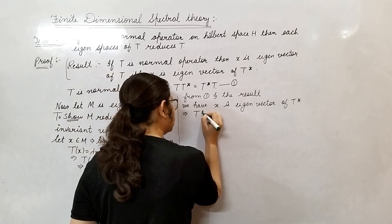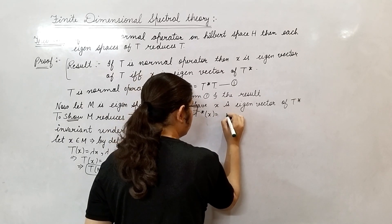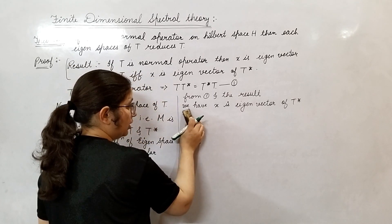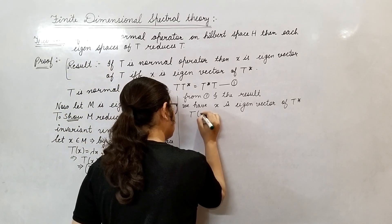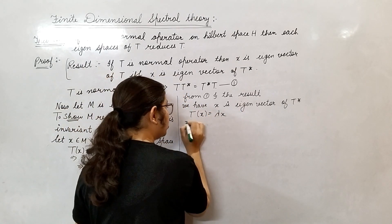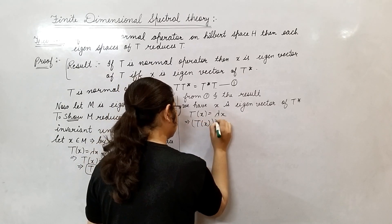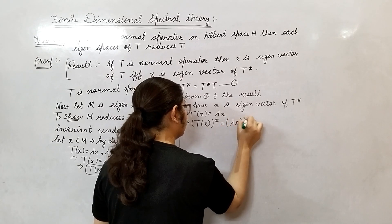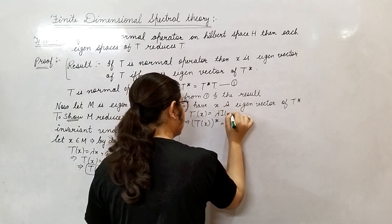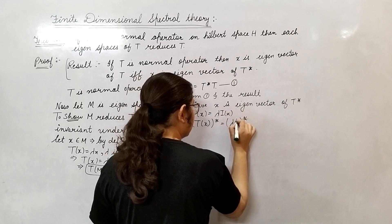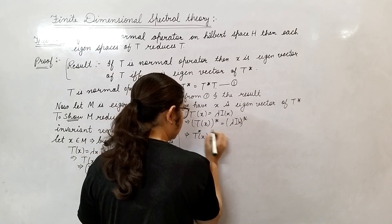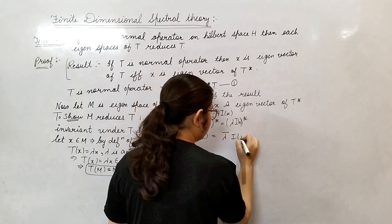This means T*(x) equals lambda bar times x. Since x is an eigenvector of T, we operate T* on both sides. T*(x) equals T*(lambda * x). We can write x as the identity operator I applied to x, so T*(x) equals lambda bar times I(x), giving T*(x) = lambda bar * x.